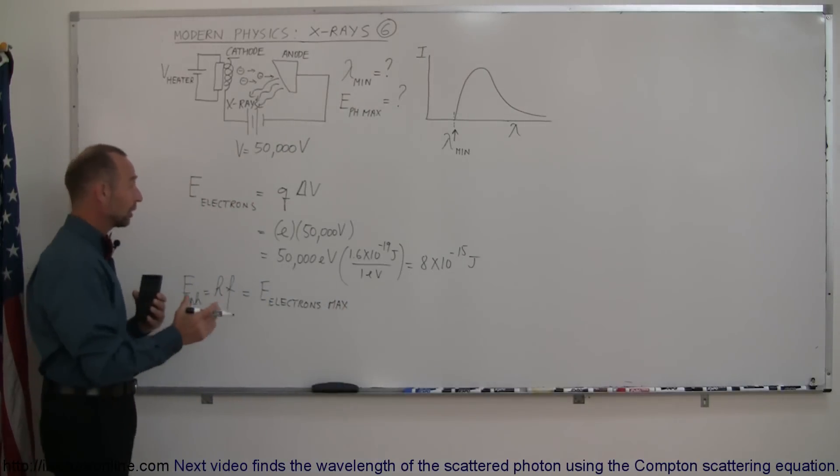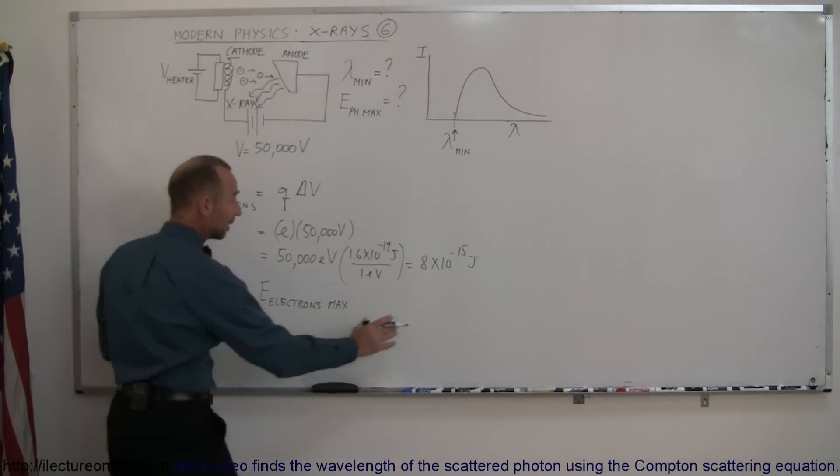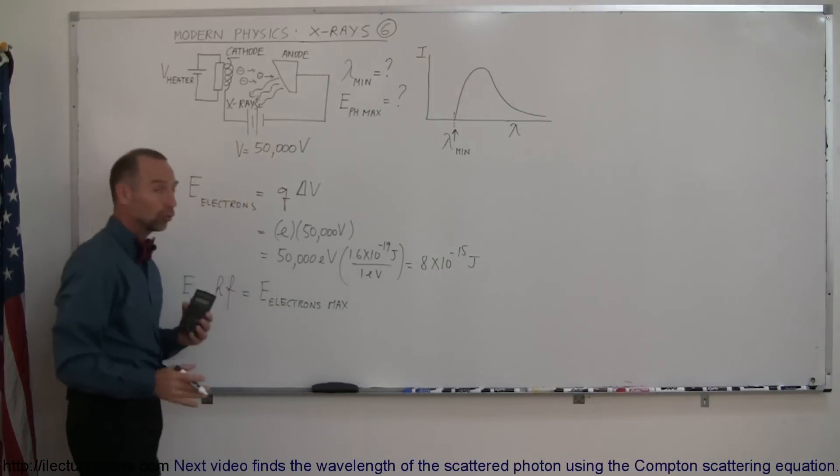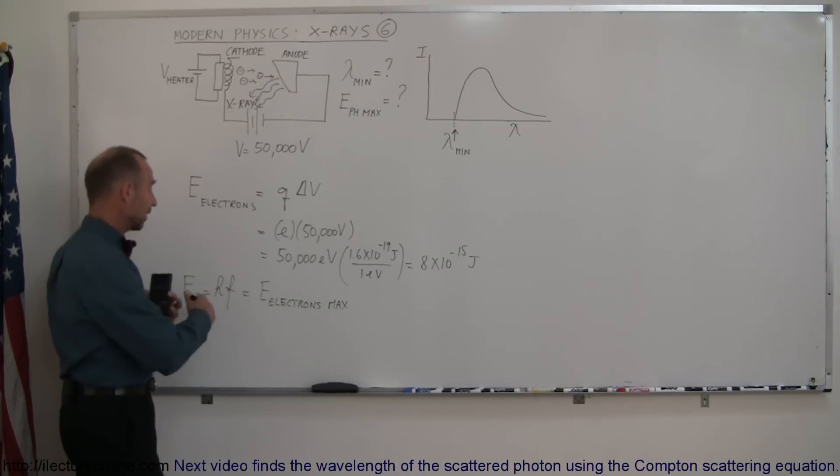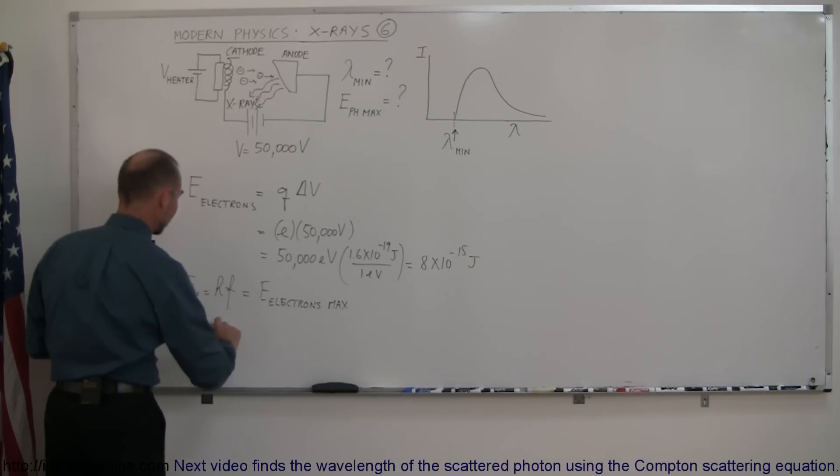And if that's true of course then we know that the maximum energy a photon can have is 8 times 10 to the minus 15 joules. Which then allows us to find the wavelength because we can then say that's equal to H times C over lambda.